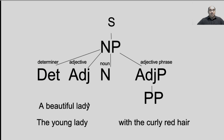I could also have "the young lady with the curly hair." Again, I have a determiner, an adjective, and a noun. But then I have a preposition, which tells me I'm going to have an object of the preposition — in this case, "the curly hair." All of this describes the lady. Since it's describing a noun, it's going to be an adjective phrase. So you have an adjective phrase, but it's also a prepositional phrase — I describe both its form and function. These are the typical things that you find in a noun phrase.